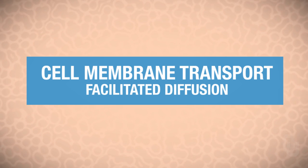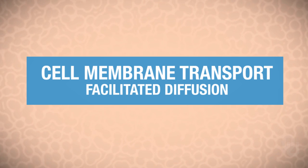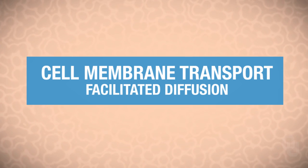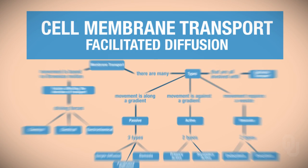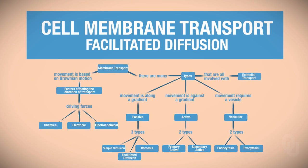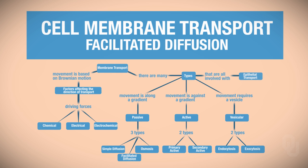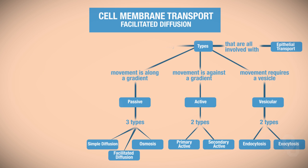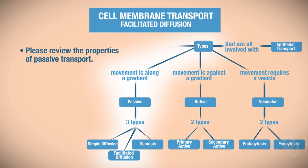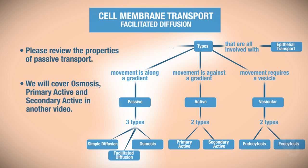This segment on cell membrane transport is going to be covering facilitated diffusion. Facilitated diffusion is a form of passive transport, so be sure to go back and review the properties of passive transport discussed in an earlier video. We'll have additional videos coming up on osmosis, primary transport, and secondary active transport.